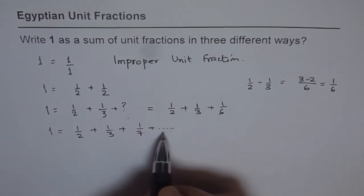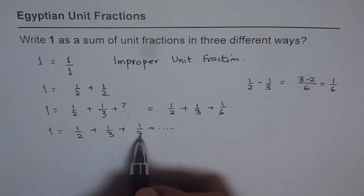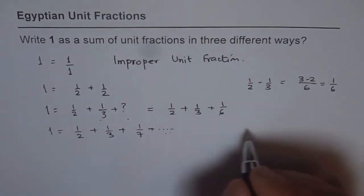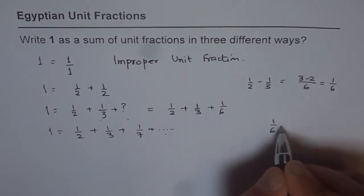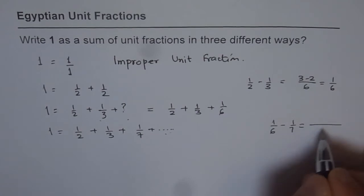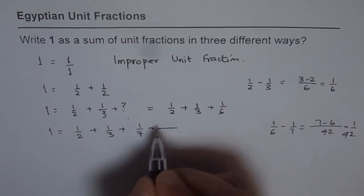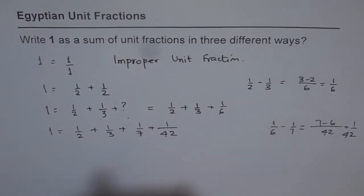Now that something, when added to 1 over 7, should give us 1 over 6, correct? So what is that number? That number we can find like 1 over 6 minus 1 over 7, which gives us 42. 7 minus 6, which is 1 over 42. So that number should be 1 over 42.